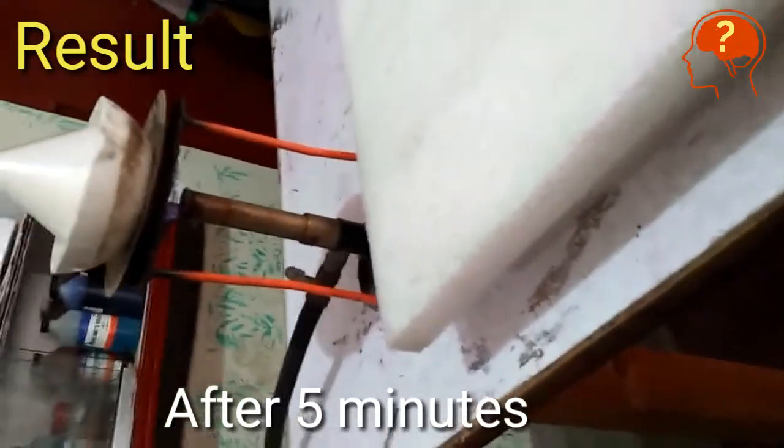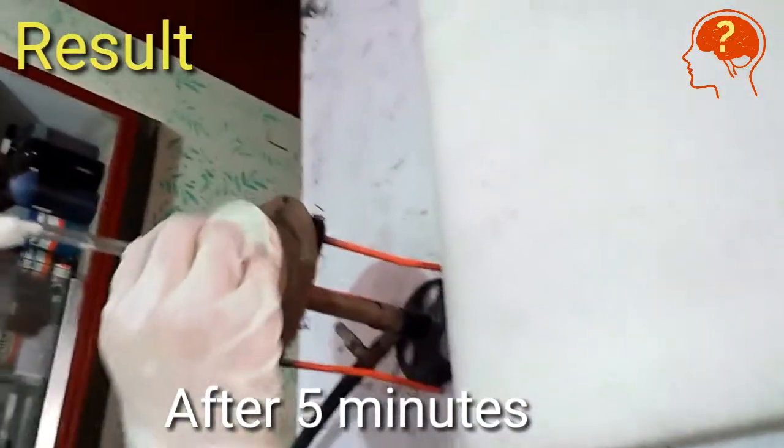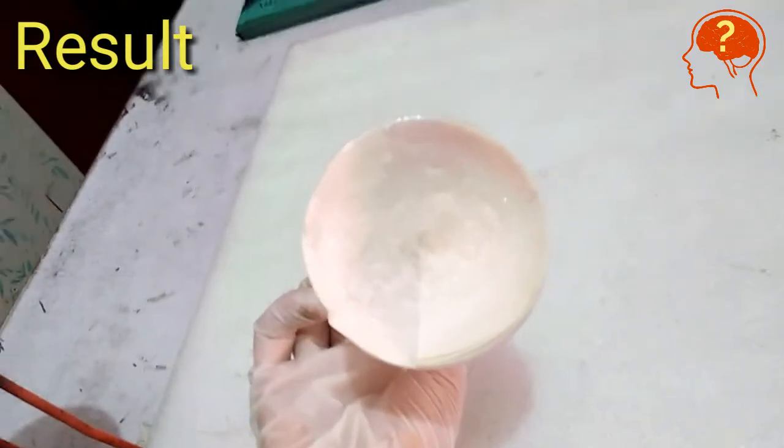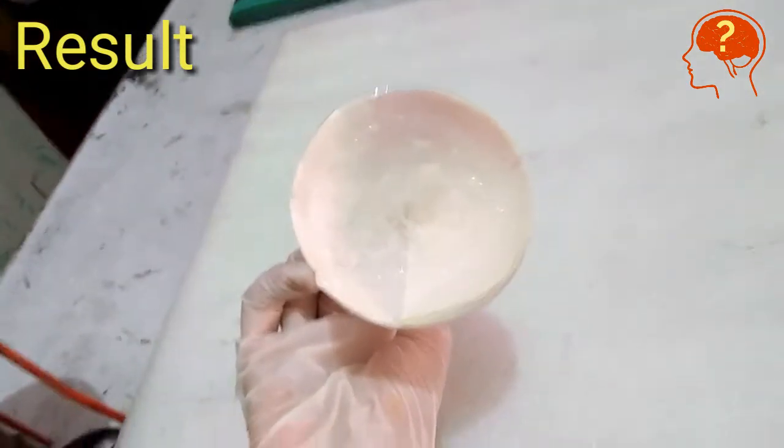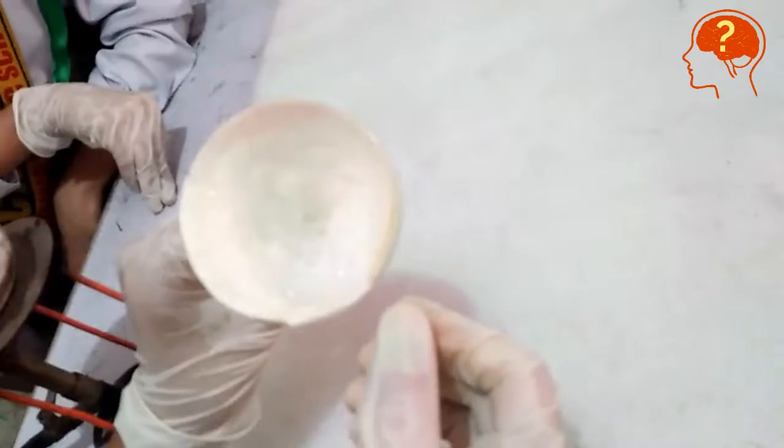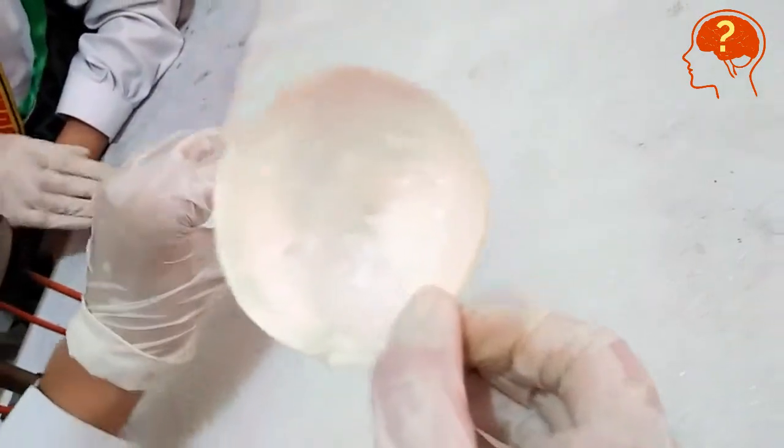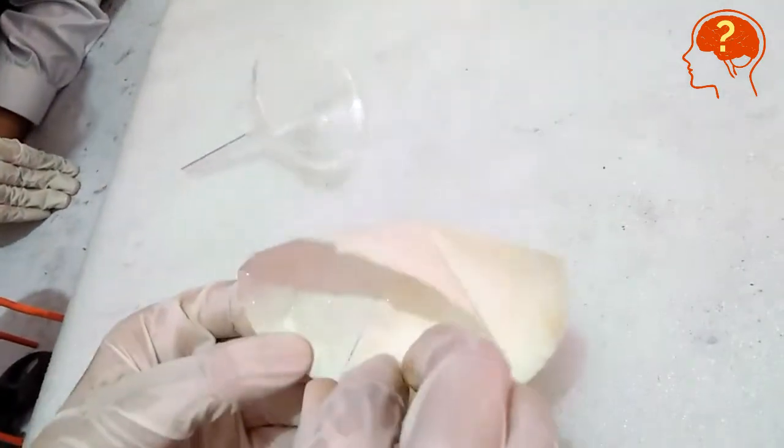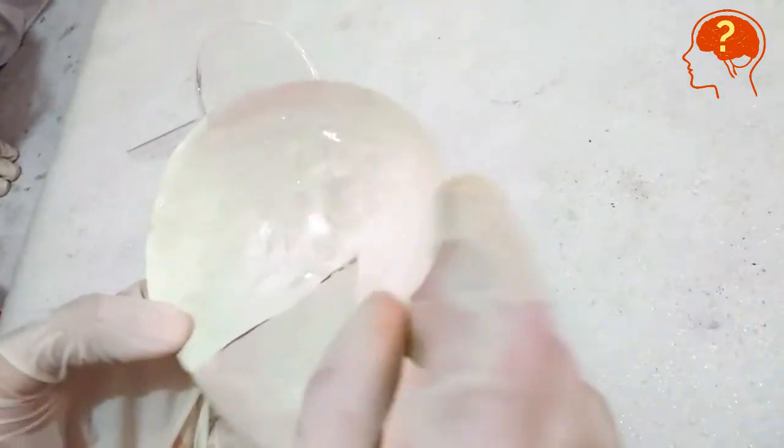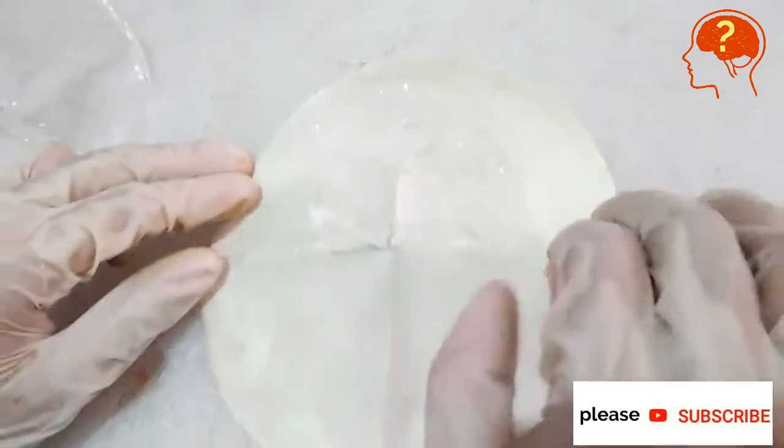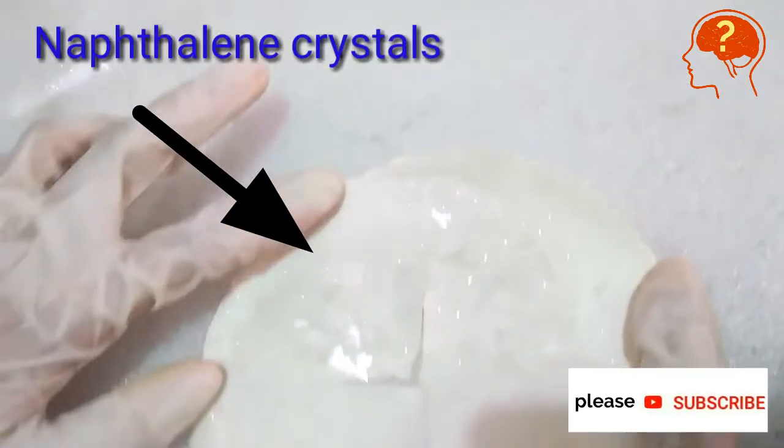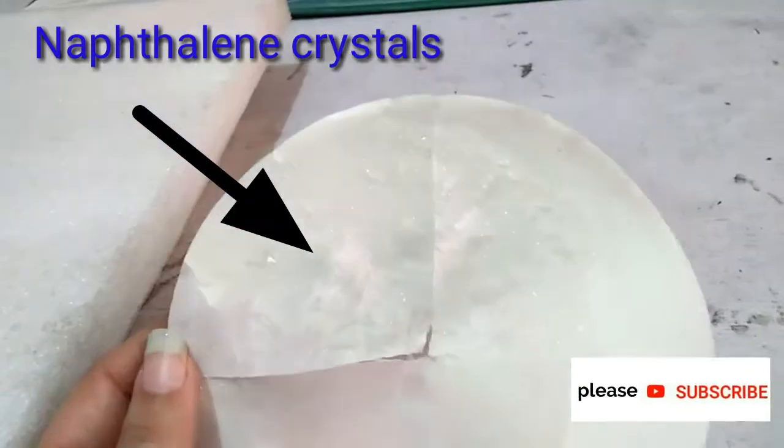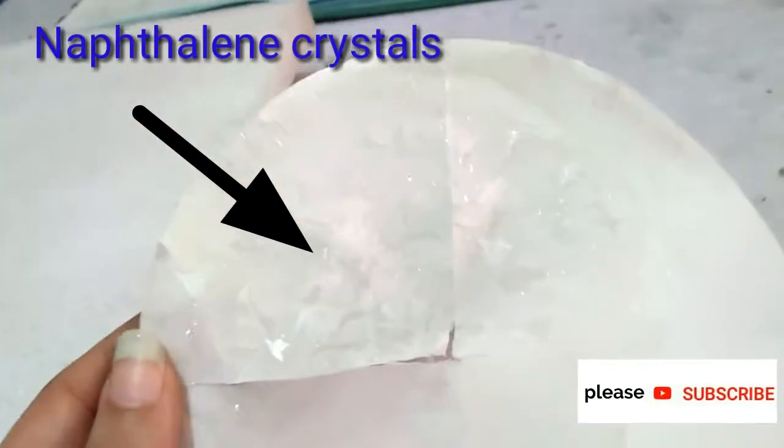Now you can see here crystals are present on filter paper. Remove the filter paper and check for crystals. You would see white shiny crystals are present on the filter paper. These are the crystals of naphthalene, and sand would remain inside that china dish.